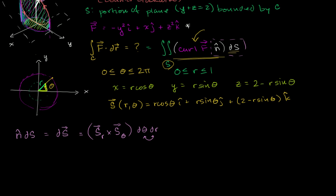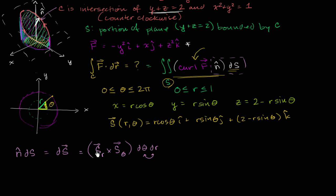Let's think about the direction that the partial with respect to r will take us. As r increases, we're going to be moving radially outward from the center of our surface. So this quantity will be a vector pointing radially outward.